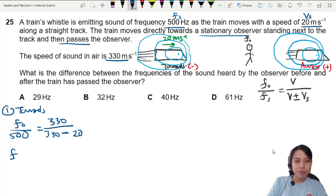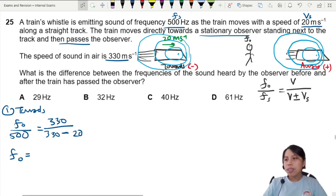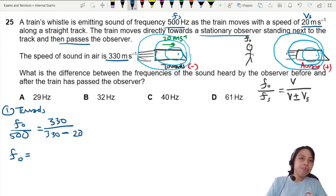Okay, let's find f observer. So I press calculator, give me a second. 532 Hertz.